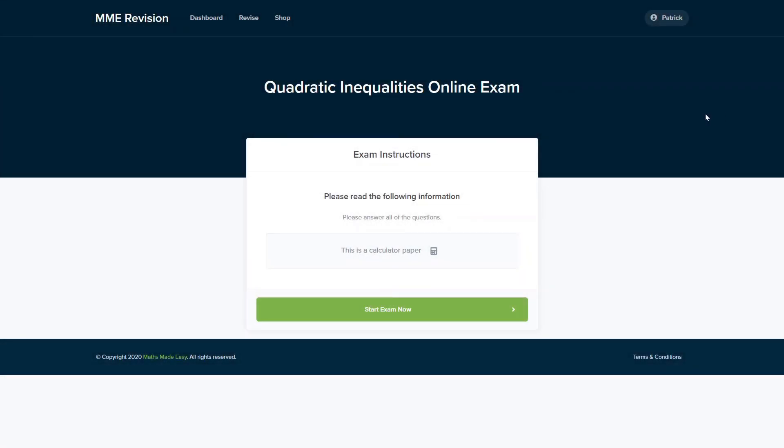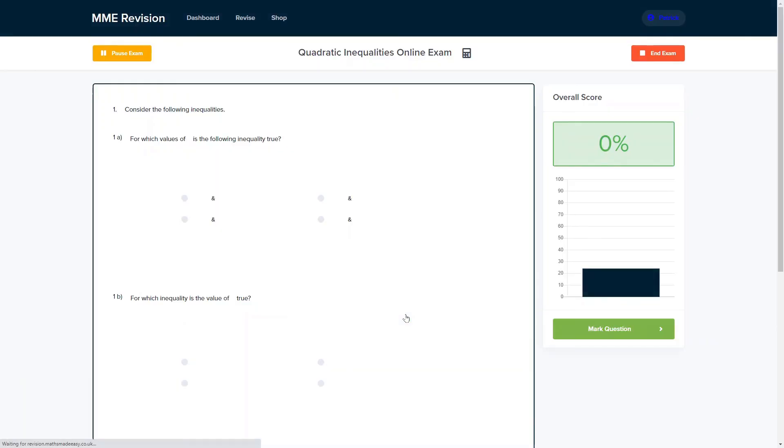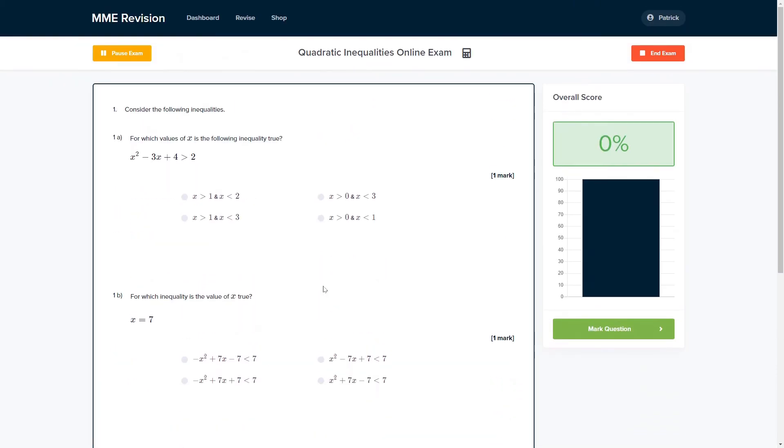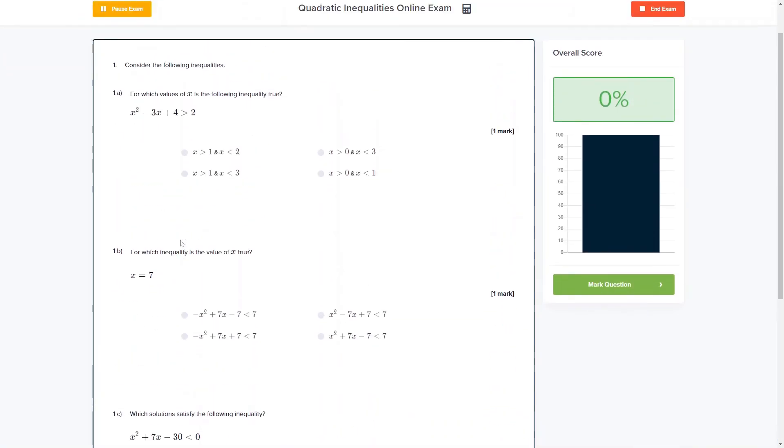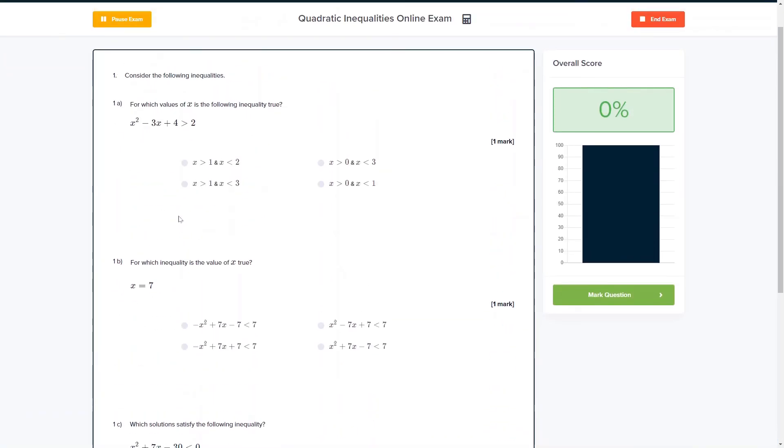If you're feeling ready to test yourself on this topic then why not do so with our online exam. This is available through our revision platform and if you take the test you'll find loads of different questions to have a go at all of which you'll receive instant feedback on. So it's a good way of finding out where you're going wrong and how you can improve in time for your actual exam. If you're interested you can click the link below and it will take you straight there.